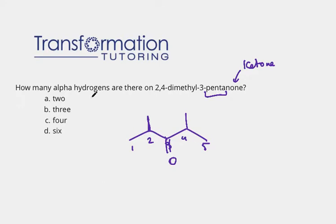Okay, so what is an alpha hydrogen? An alpha hydrogen is a hydrogen that is on a carbon next to the C double bond O. So I can go ahead and I can highlight my C double bond O. There it is.